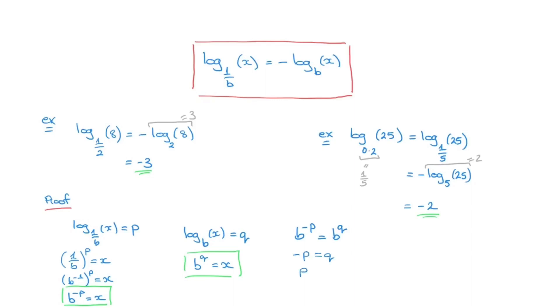In other words, p equals negative q. But remember, p was log base 1 over b of x and q was log base b of x. So we've just proved the formula. Indeed, this is the same thing as log base 1 over b of x equals negative log base b of x.